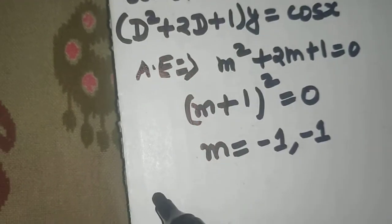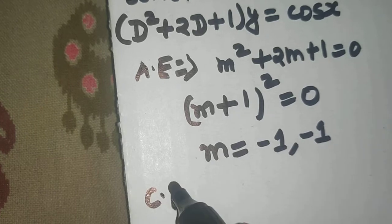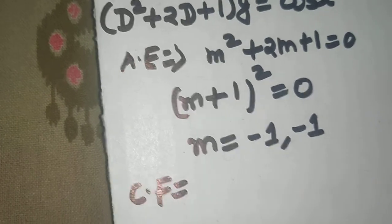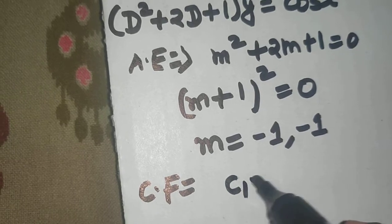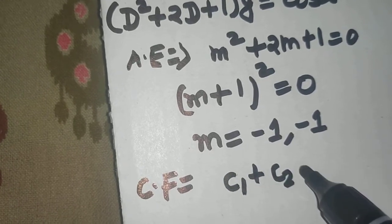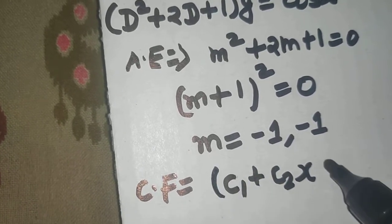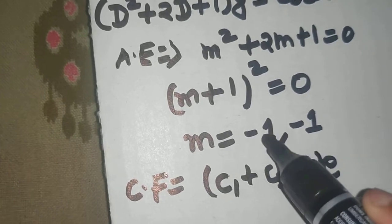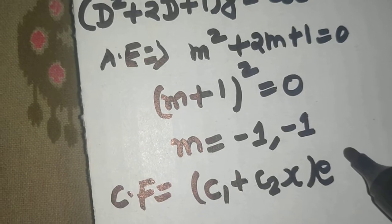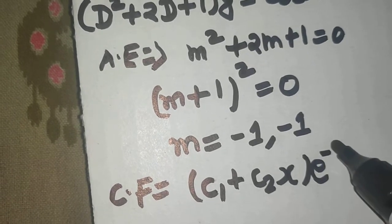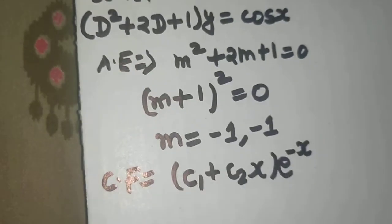So in case the roots are repeated, how to write the complementary function? So we write complementary function as c1 plus c2 times x and e power what is common minus 1. So e power m into x. So e power minus x will be there. This is your complementary function done.